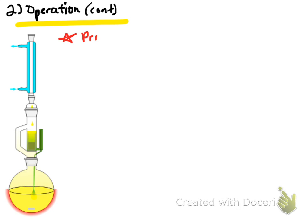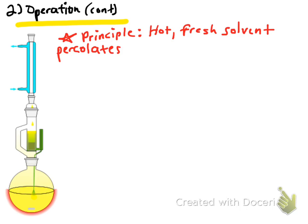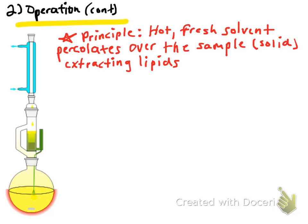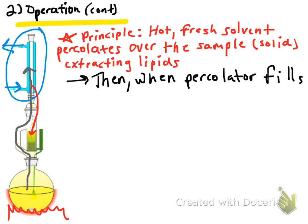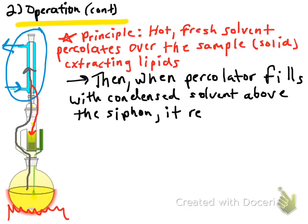Now let's look at how it's run and the principle governing the extraction. The main principle is that hot, fresh solvent percolates over a solid sample, allowing the extraction of lipids. Heat is applied to the boiling flask; the solvent evaporates up into the reflux condenser, condenses, and drops down into the thimble — which is where the sample is. Once the percolator fills with condensed solvent up to the siphon line, it siphons back into the round-bottom boiling flask.